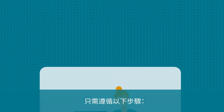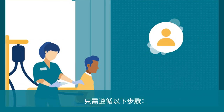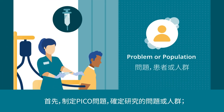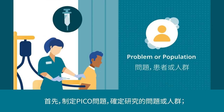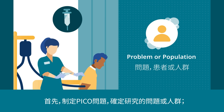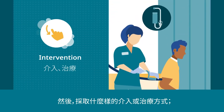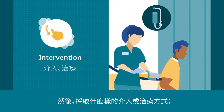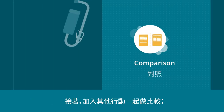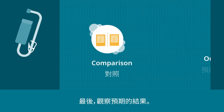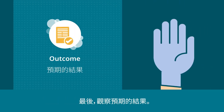Just follow these steps. Formulate the PICO question by determining the problem or population to study, the intervention or action to take, the comparison action to take, and the outcome expected.